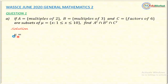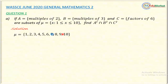Starting with the universal set, it contains X such that 1 is less than or equal to X and X is less than or equal to 10. So the universal set contains integers from 1 to 10 inclusive: {1, 2, 3, 4, 5, 6, 7, 8, 9, 10}.